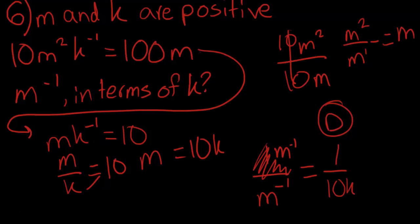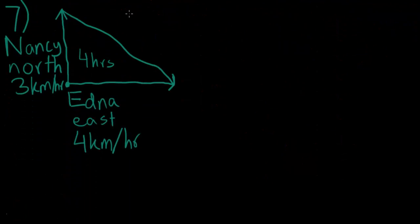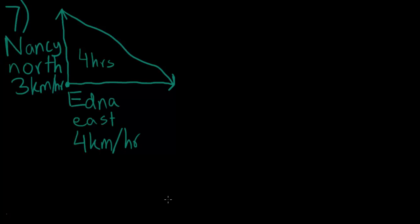Moving on to number 7, which is a triangle. Edna and Nancy leave the house of a common friend at the same time and walk for 4 hours. Edna walks due east at the average rate of 4 km per hour, and Nancy walks due north at the average rate of 3 km per hour. What is the straight line distance between them in kilometers at the end of the 4 hours? Here's a nice thing to remember by which the college board has done great at. Edna starts with E and she goes east. Nancy starts with N and she goes north.